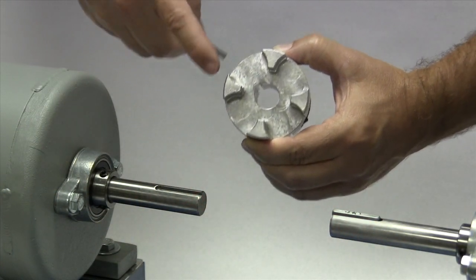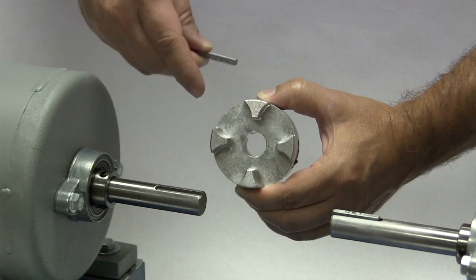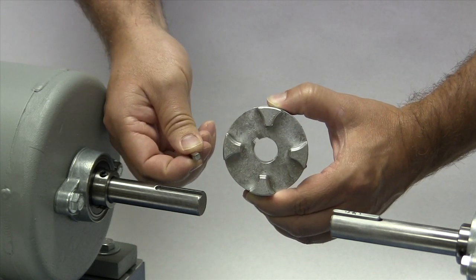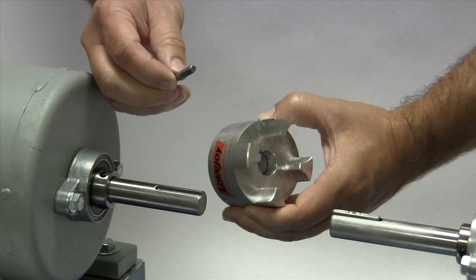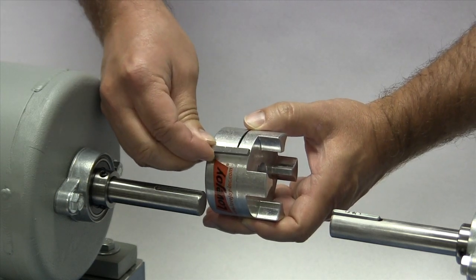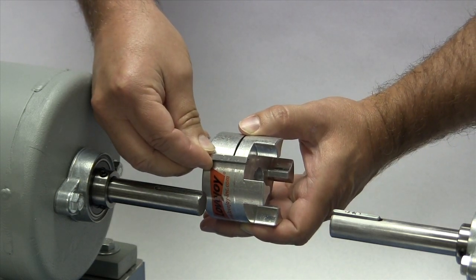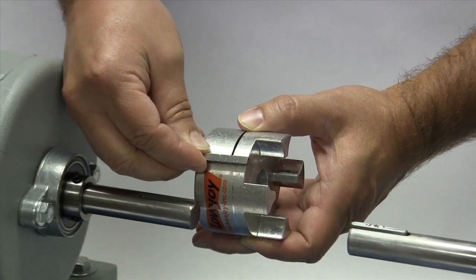If the shaft and the hub both have keyways, make sure you have the appropriate key ready to use when performing this installation. Ideally, the keys should be the same length or slightly longer than the hub to transmit the maximum allowable torque.